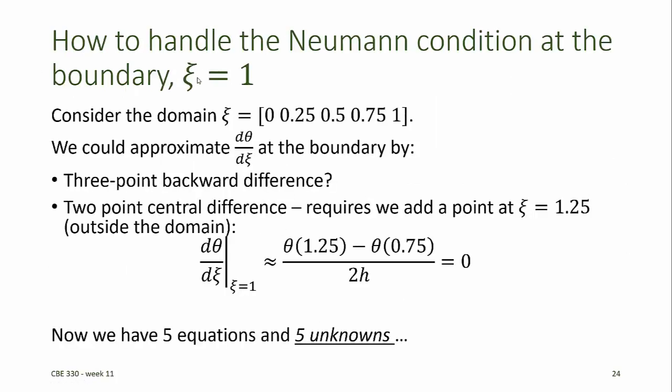Consider finding a solution to this problem using the finite difference method with a mesh containing just five points at 0, 0.25, 0.5, 0.75, and 1. Since the value of theta is not known at zeta equals 1, we need an additional equation describing that mesh point.